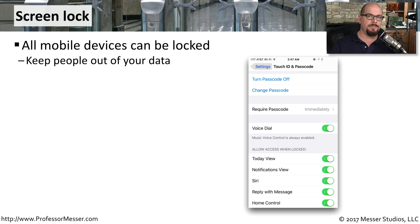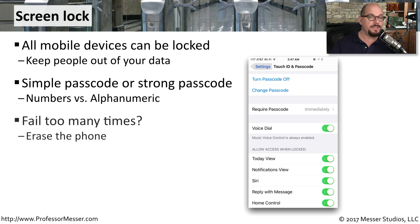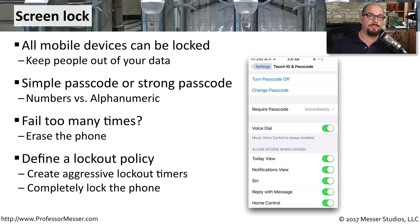An important security feature of any mobile device is to lock the information and only allow access if you know the passphrase. That passcode or passphrase can be a simple numeric passcode, or it may require a separate passphrase that includes letters and numbers — an option you can set on the mobile device manager and force on all devices. If somebody enters an incorrect passphrase a certain number of times, you can decide what to do: for example, after 10 wrong attempts, erase all data on the device. You can also slow down the process to prevent brute force attacks, or after a certain number of attempts, lock the phone completely and require input from the security team to regain access.